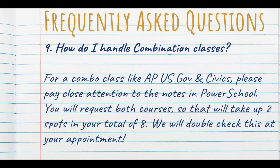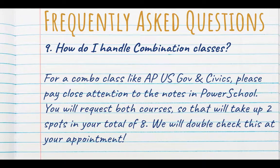How do I handle the combination classes? For a combo class like AP U.S. Government and Civics, please pay close attention to the notes in PowerSchool. You will request both courses so that it will take up 2 spots in your total of 8. We will double check this at your appointment.